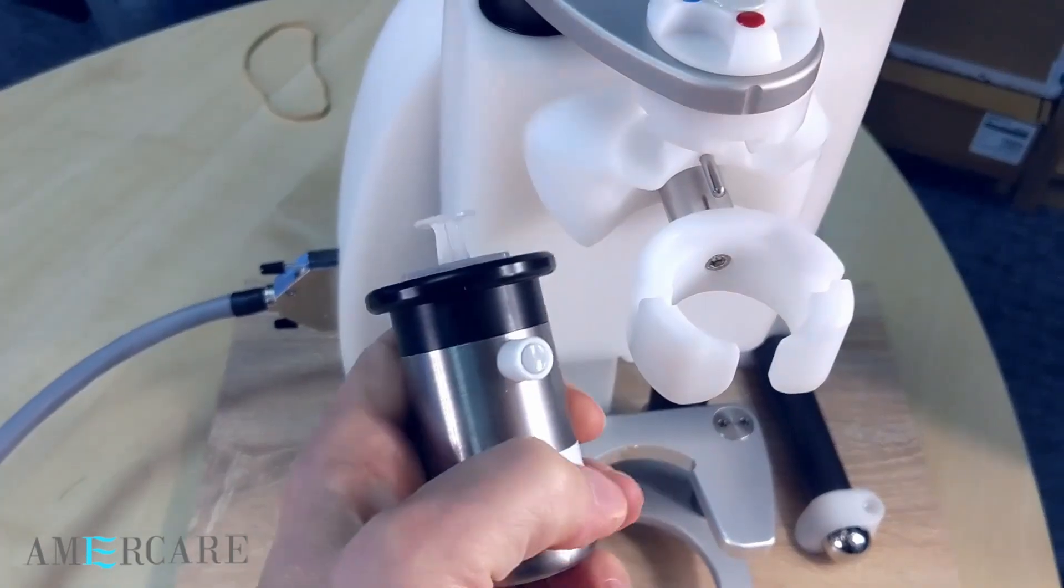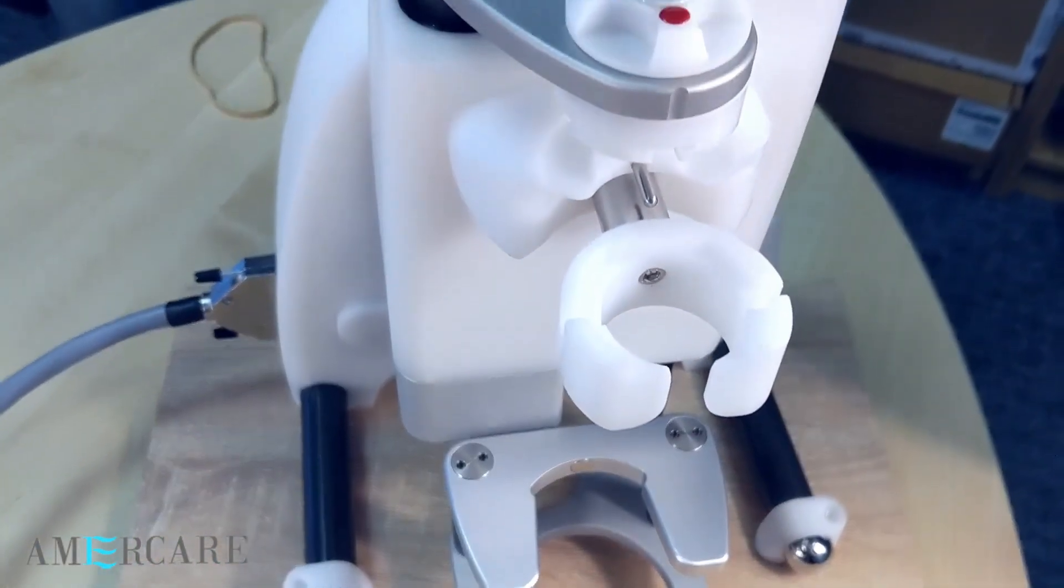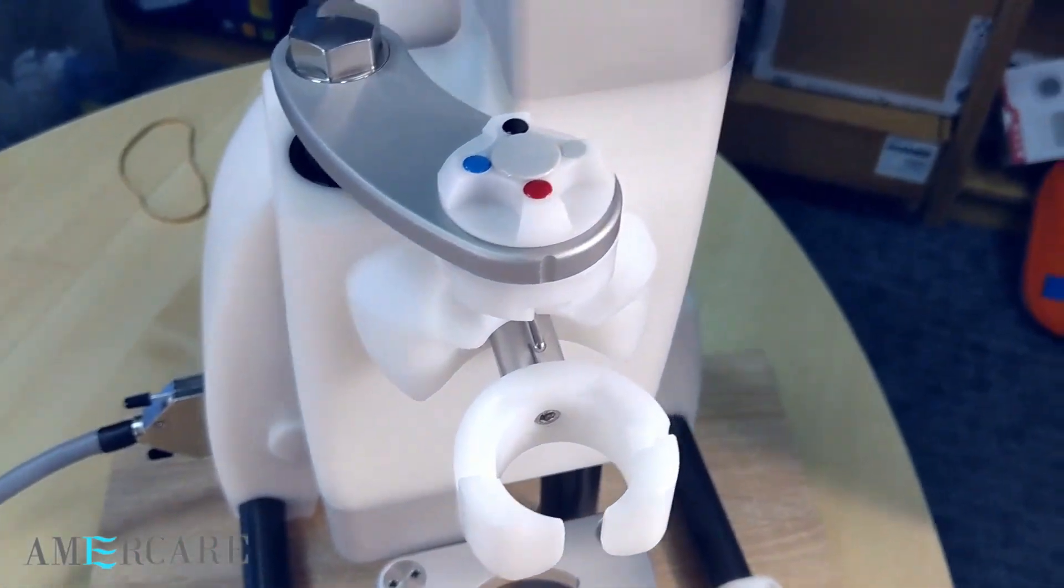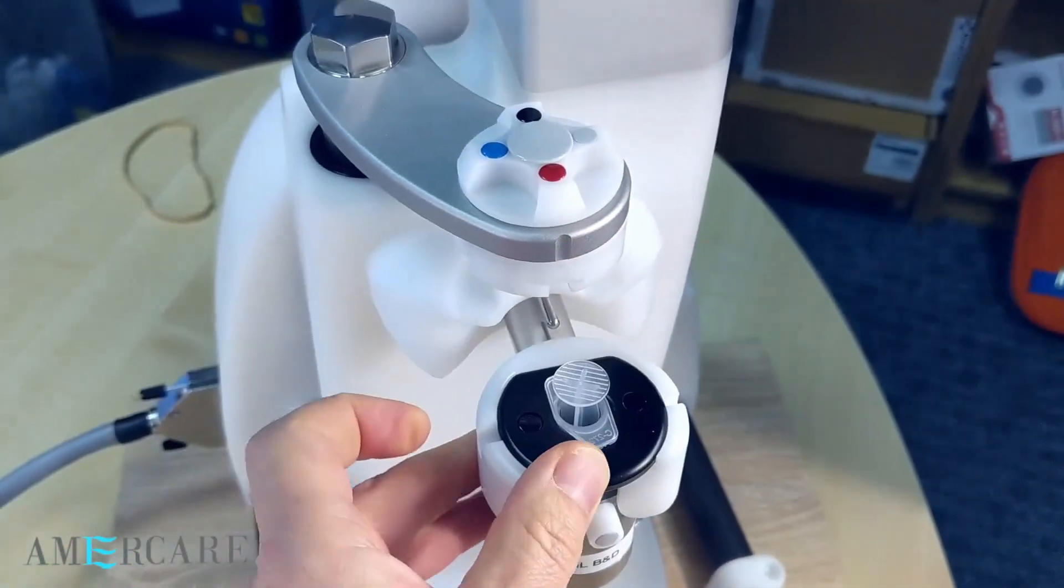So when fitted, ensure that the colored cap on the syringe shield matches the colour on the cap on the dial. For example, this is a 5mm BND syringe shield. This has a grey cap, so we need to rotate the select on the top of the unit to the grey position.